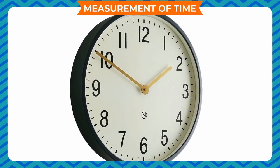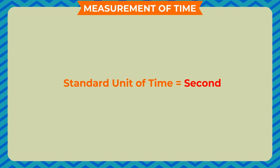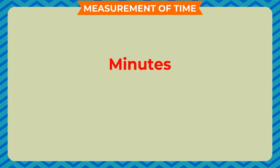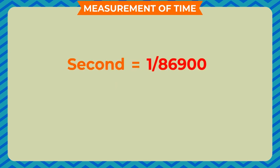The standard unit of time is second. The other units being minutes, hours, day, etc. A second is 1 upon 86,400 part of a mean solar day.